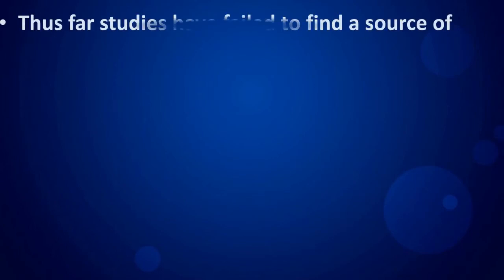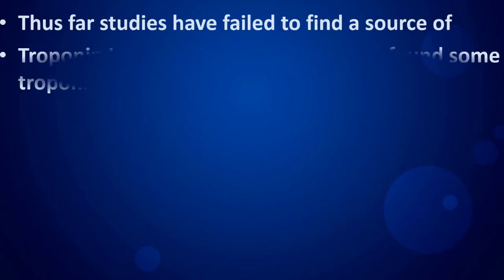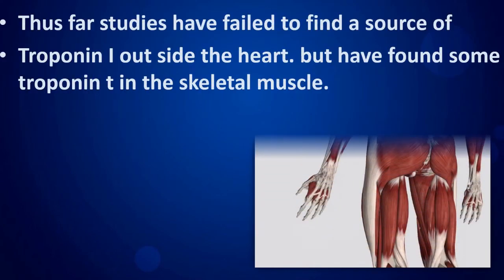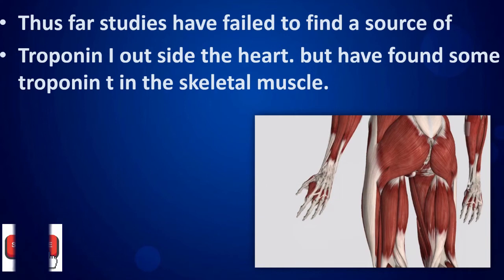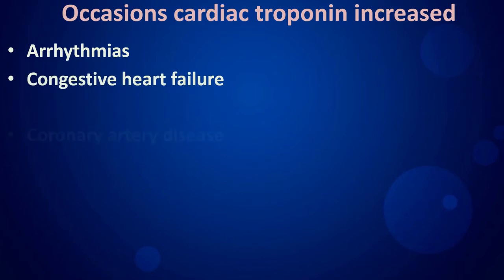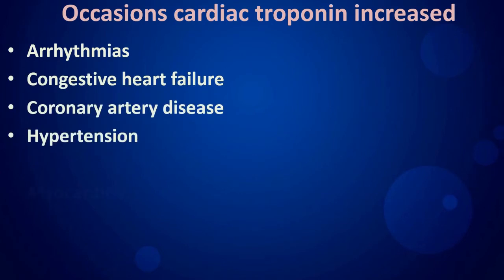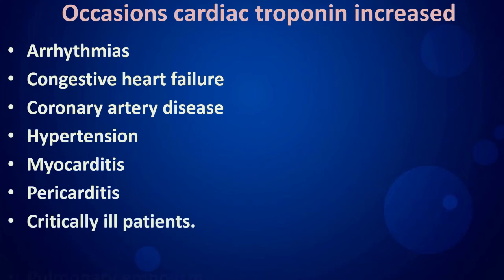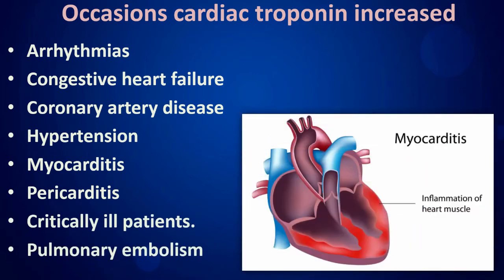Studies have failed to find the source of Troponin I outside the heart, but have found some Troponin T in skeletal muscle. Cardiac troponin levels are increased in: arrhythmias, congestive heart failure, coronary artery disease, hypertension, myocarditis, pericarditis, critically ill patients, and pulmonary embolism.